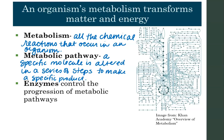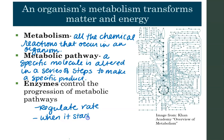All of these reactions are controlled by enzymes. From Chapter 3, we talked about the functions of proteins — one of the main functions was to act as an enzyme. An enzyme is a biological catalyst: a chemical that helps a chemical reaction occur without being consumed. Those enzymes are going to control the progression of metabolic pathways, regulating the rate, when a reaction starts, when a reaction stops, and all steps in between.